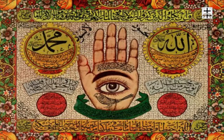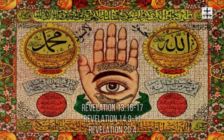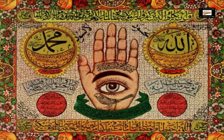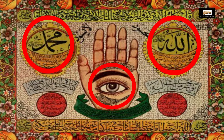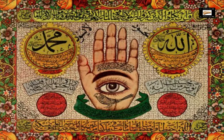Here's a blatant example of illuminati symbolism in Islam: you have this eye, the Islamic symbolism of Allah, and this eye with a hand on it — the mark of the beast going into the hand in Revelation chapter 13. Then you have the seal of Muhammad and the word Allah right beside it. You could see that as the unholy trinity of Satan, the Antichrist, and the false prophet — Satan being Allah, the Antichrist being this eye, and Muhammad being the false prophet — a satanic trinity right there.